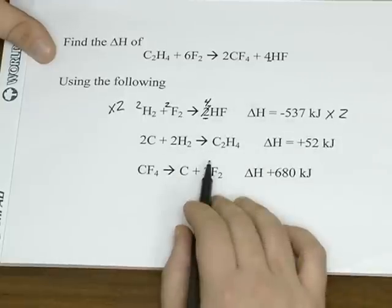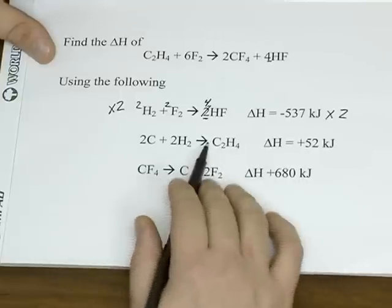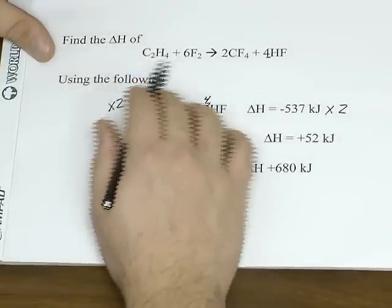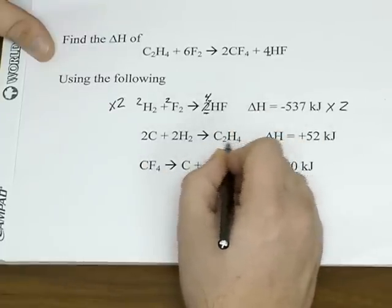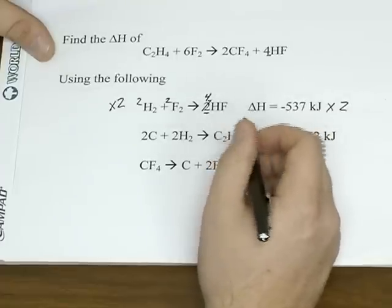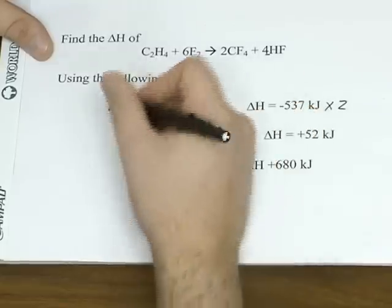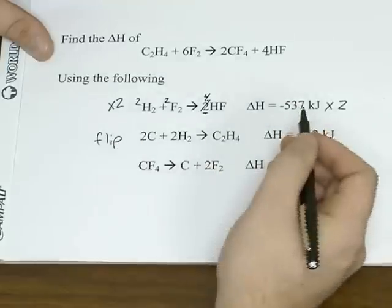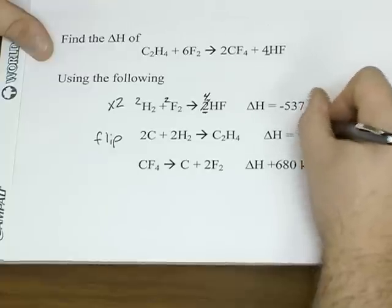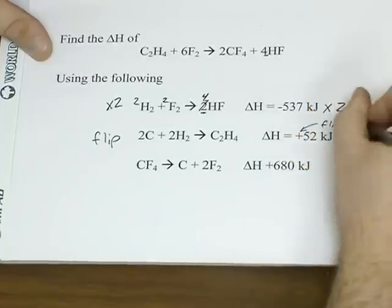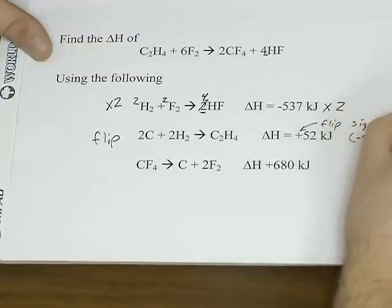Look at the second equation. Again, try to focus on a substance that you only see in this one equation when you compare it to the equation you want. So in this case, we want to focus on C2H4, better known as ethylene. So you have one ethylene on the right, but in the equation that we want, we have one on the left. So we're going to have to flip this equation around. So when you flip the equation, you effectively have to flip the sign around. Which means plus 52 turns into negative 52.